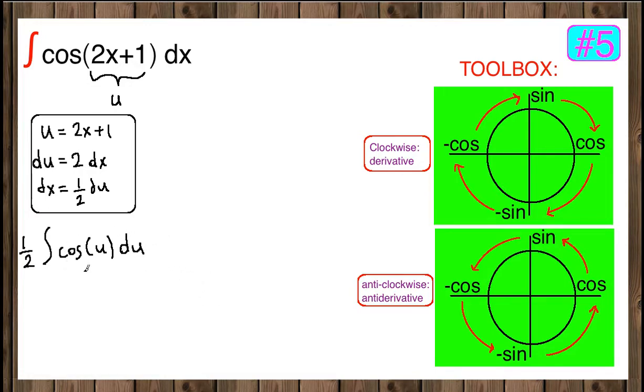Now we know how to integrate cosine of u. What is the antiderivative of cosine of u? The antiderivative of cosine of u is sine.